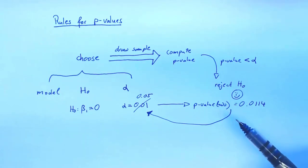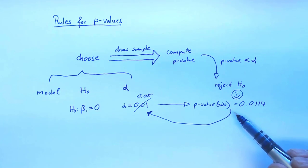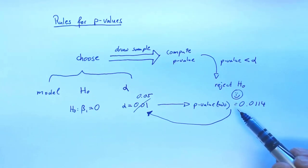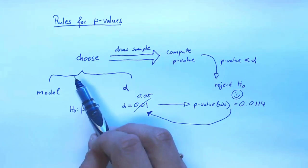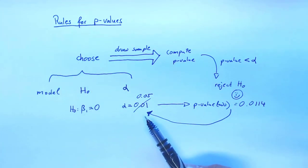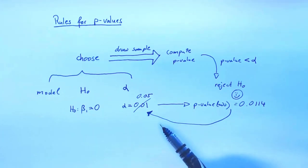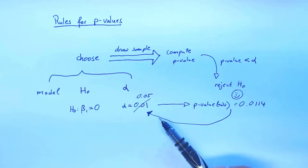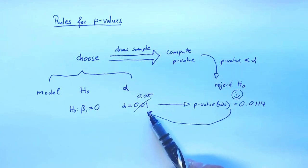Going back and choosing things after seeing the sample messes up our statistical error control. The machinery of statistical testing is set up to ensure that we believe false things only with a small probability. But by violating the testing protocol and going back to choosing these things after we've seen the sample, we're undermining the mechanism that makes error control work. If we do this, statistical testing no longer guarantees anything — we might believe things that are false with whatever probability.